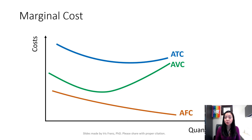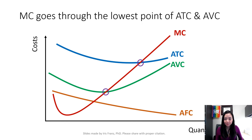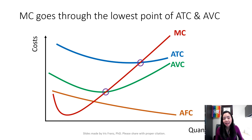Now we're putting the marginal cost curve together with average total cost, average variable cost, and average fixed cost. Notice that the marginal cost curve will go through the lowest point of average total cost and average variable cost. When marginal cost is higher than average total cost, average total cost is going up. When marginal cost is lower than average total cost, average total cost is going down. The same relationship exists between marginal cost and average variable cost: when marginal cost is higher than average variable cost, average variable cost goes up; when marginal cost is lower, average variable cost goes down.